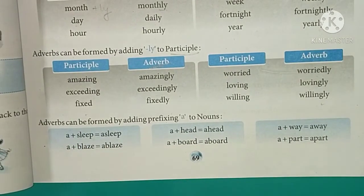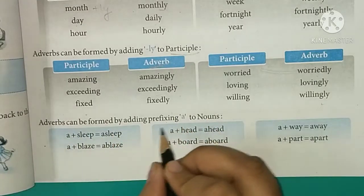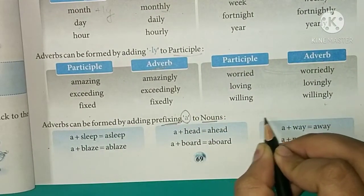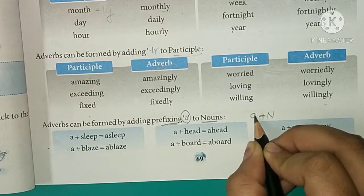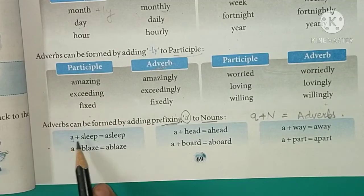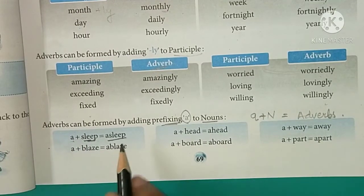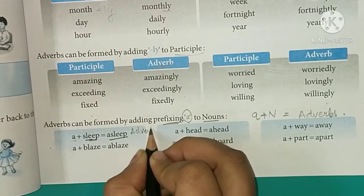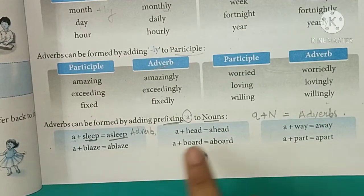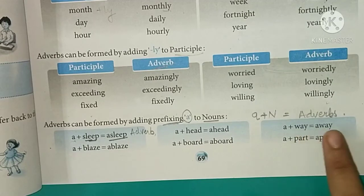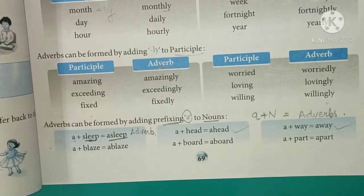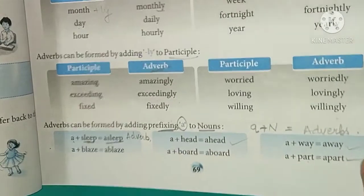Adverbs can also be formed by adding a prefix 'A' to nouns. If we add 'A' at the beginning of a noun, it forms an adverb. Examples: sleep → asleep, blaze → ablaze, head → ahead, board → aboard, way → away, part → apart. Note that in some cases the meaning also changes.